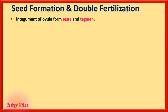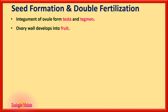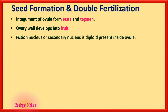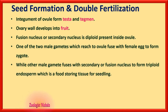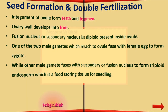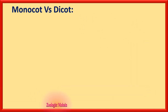Seed formation and double fertilization: the integument of the ovule forms testa and tegmen, which are the two layers of the seed coat. The ovary wall develops into the fruit. The fusion nucleus or secondary nucleus is the diploid nucleus inside the ovule. One male gamete fuses with the female egg to form the zygote, while the other male gamete fuses with the secondary or fusion nucleus to form triploid endosperm, which is a food-storing tissue for the seedling.